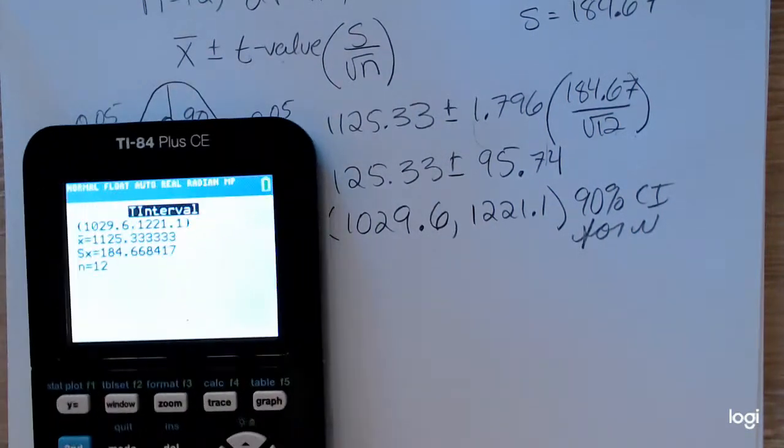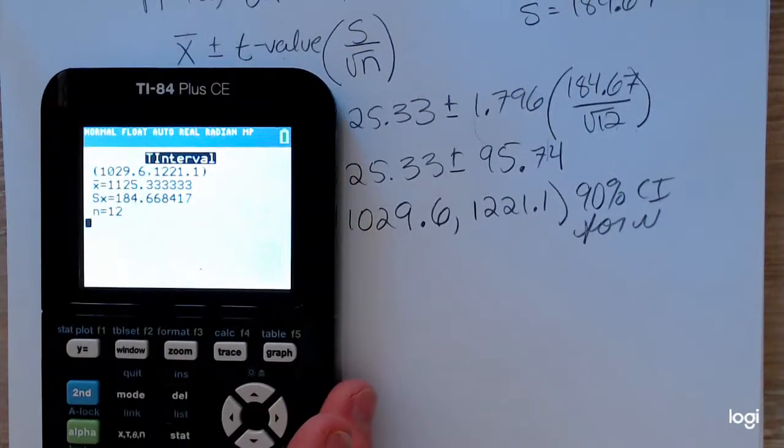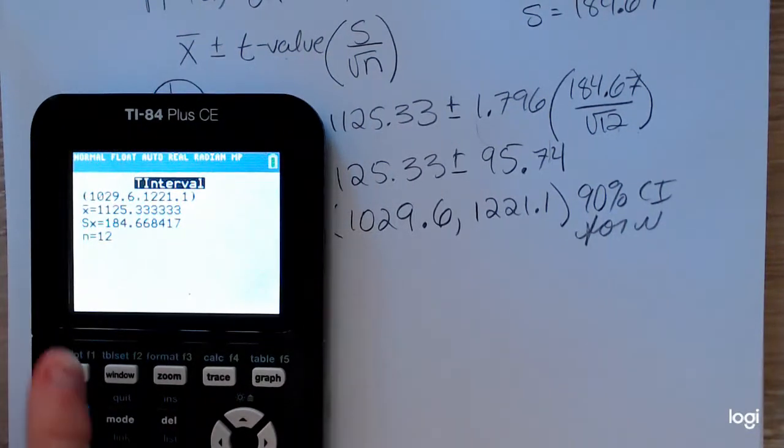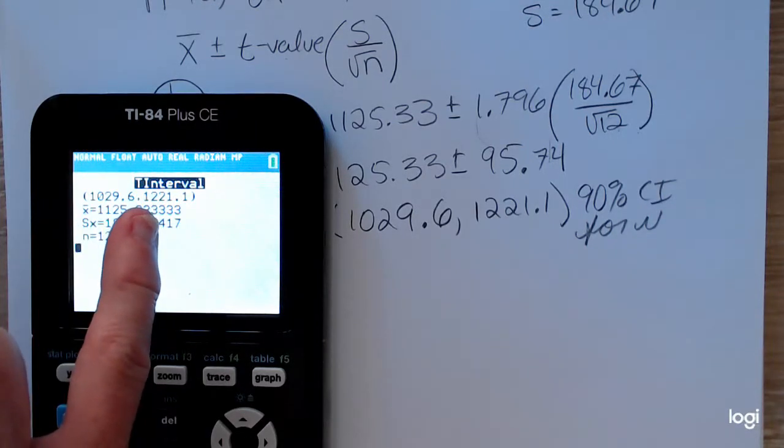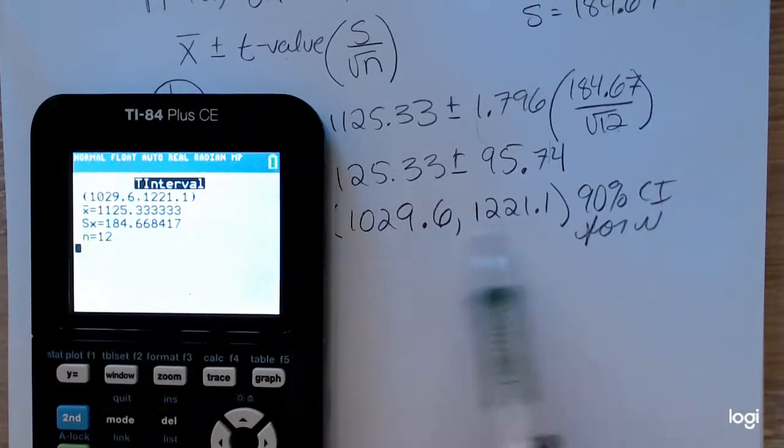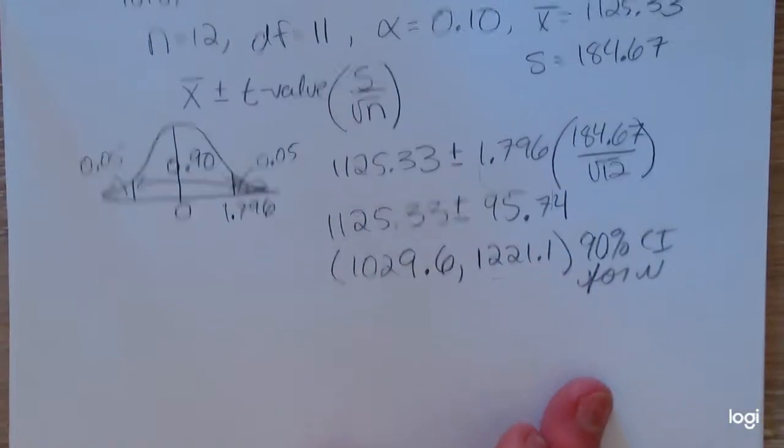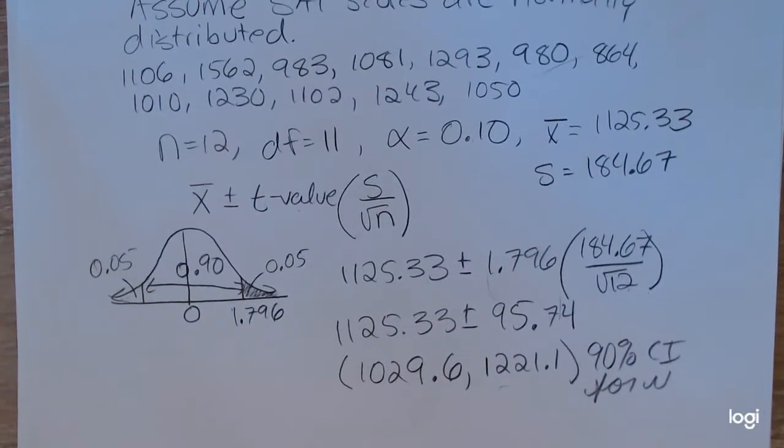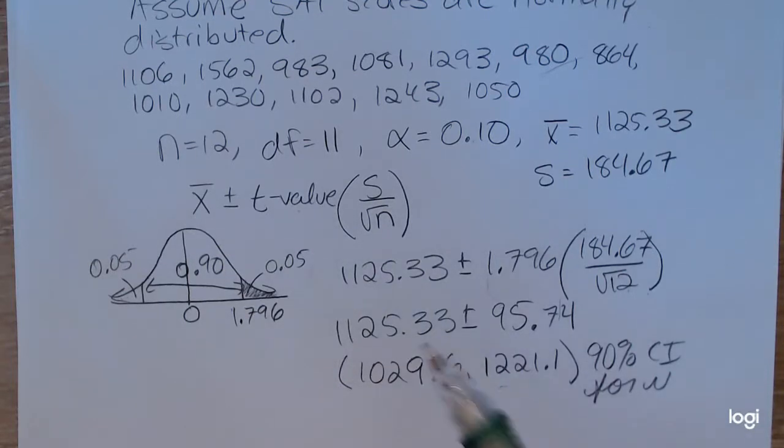And let's compare that to what I got by hand. It's a little blurry, my apologies. The lower endpoint from the built-in T interval function is 1029.6, and the upper endpoint is 1221.1, which is what I got when I rounded to one decimal place, and I did that by hand. So, it's always convenient to use technology, but it is good practice to do a few of these by hand, just so you know and understand where these pieces come from.